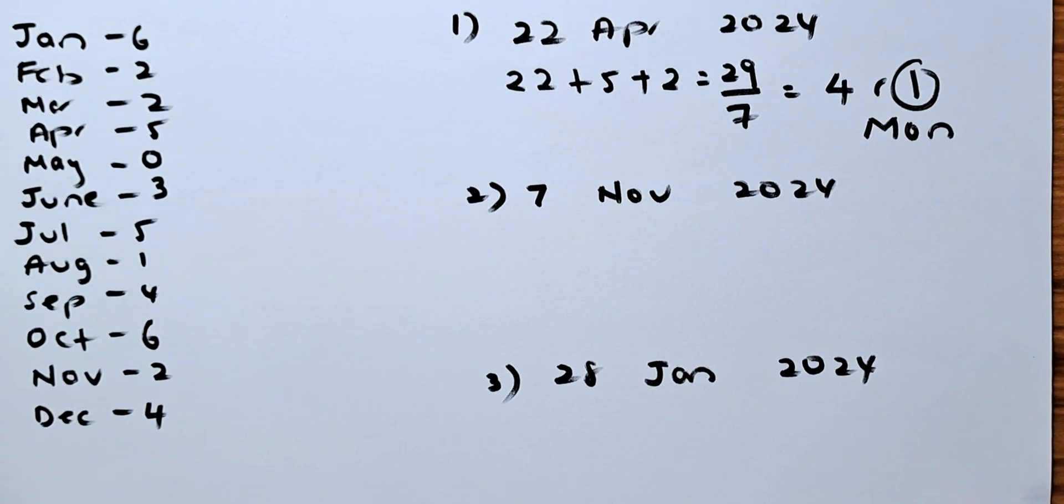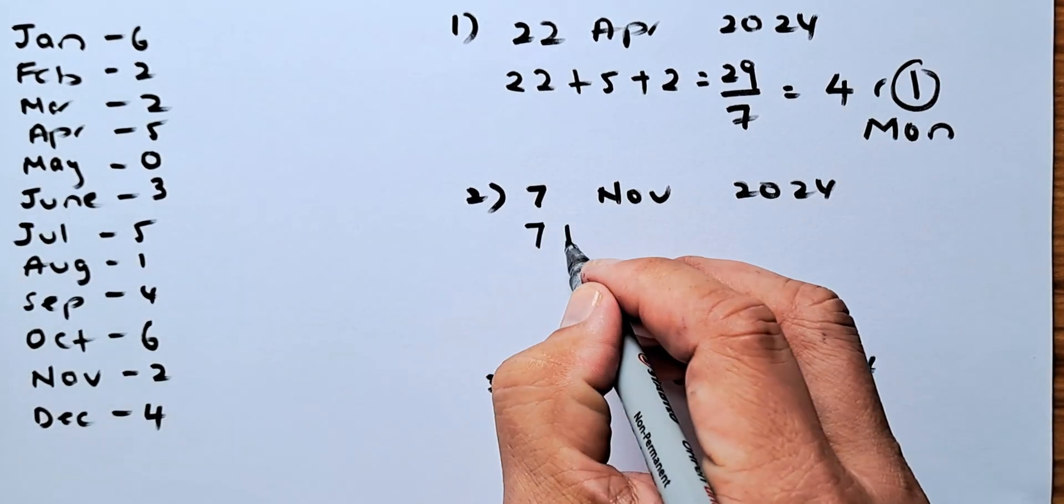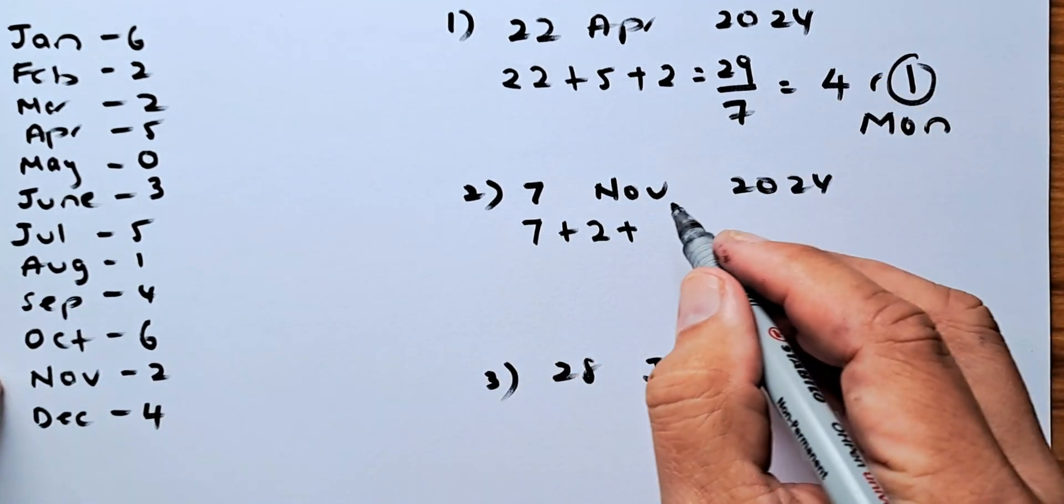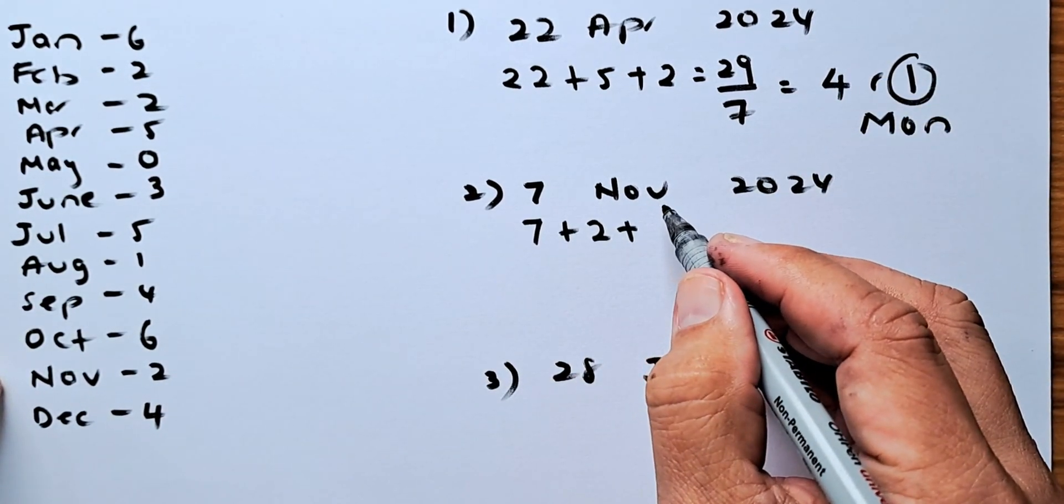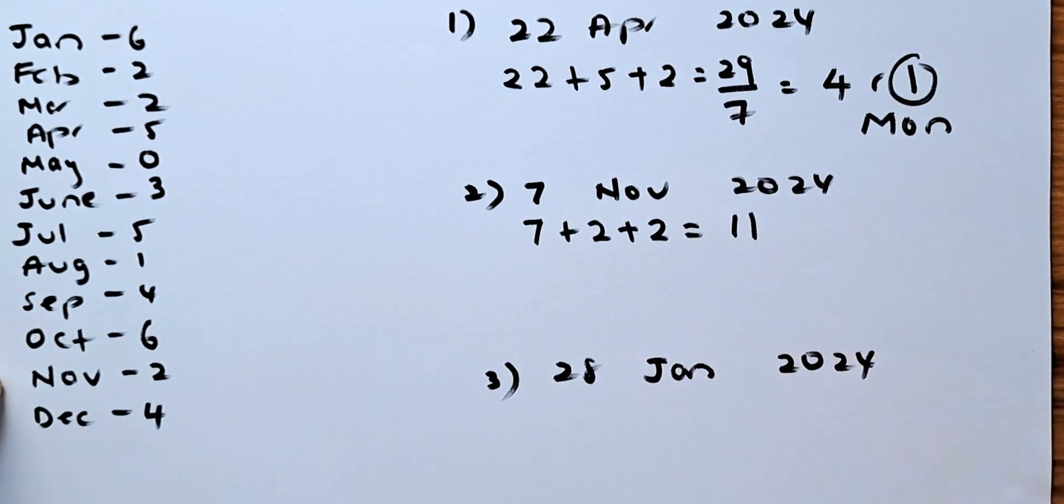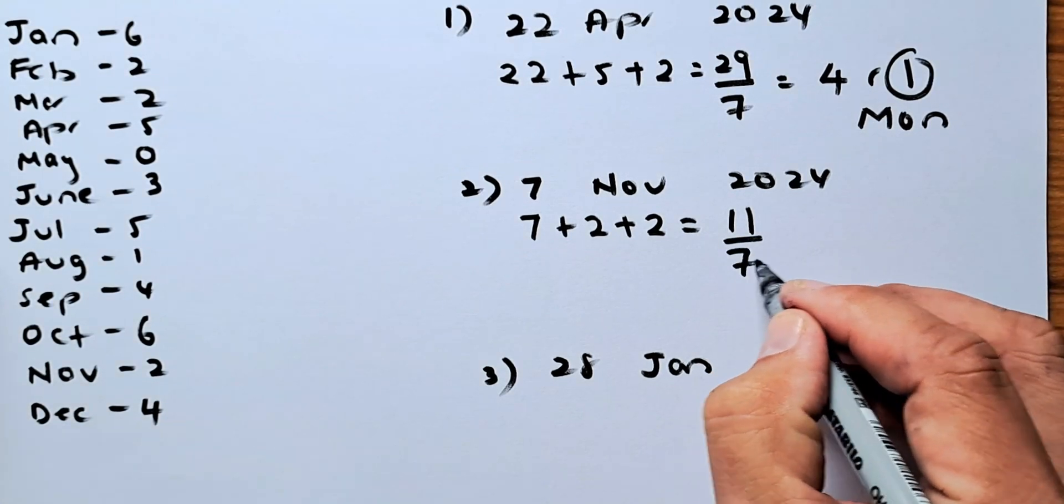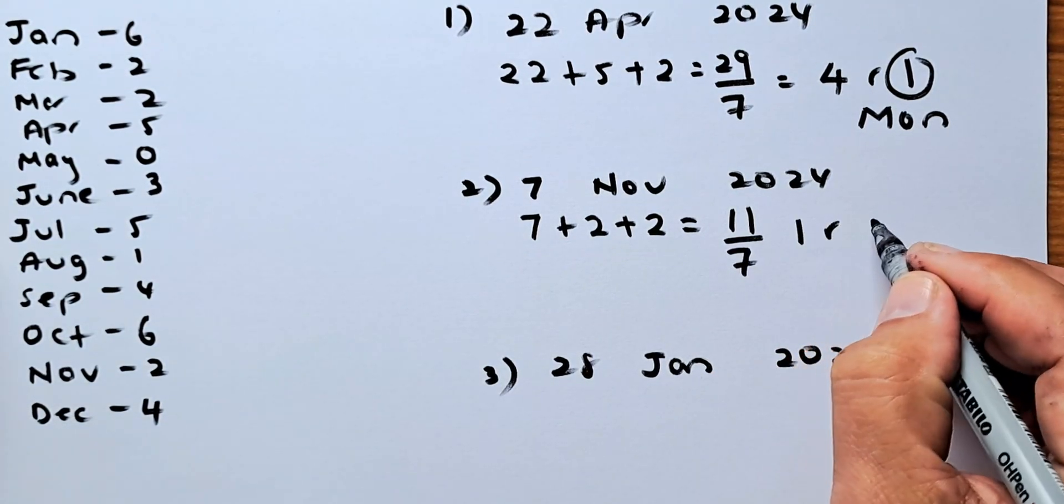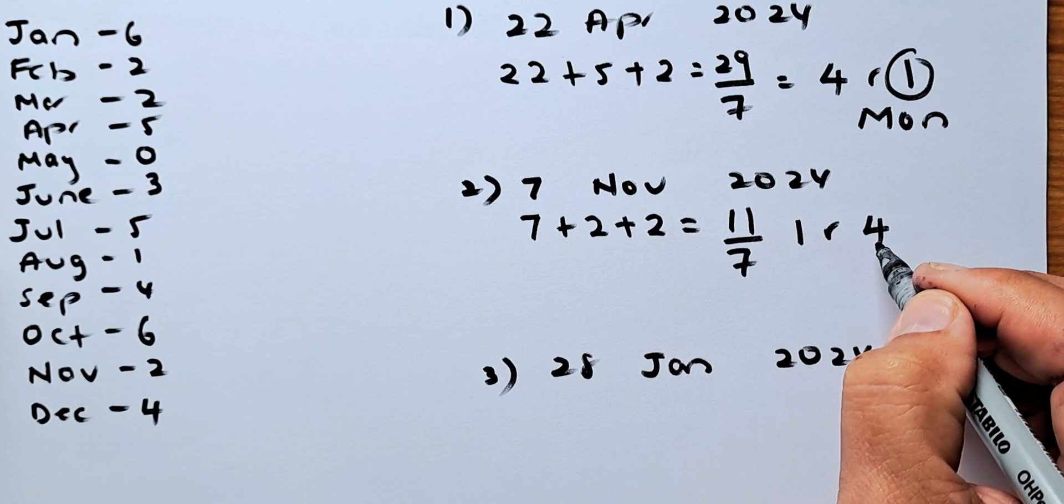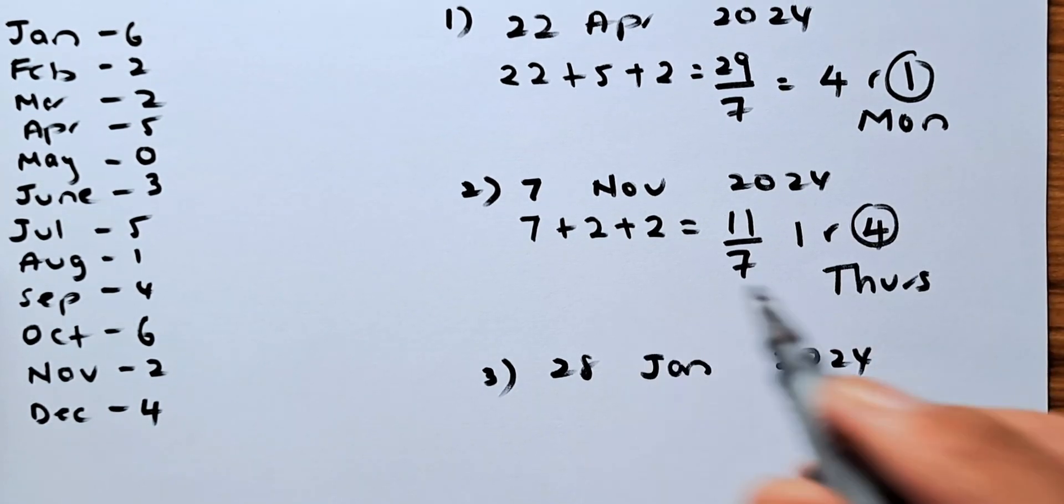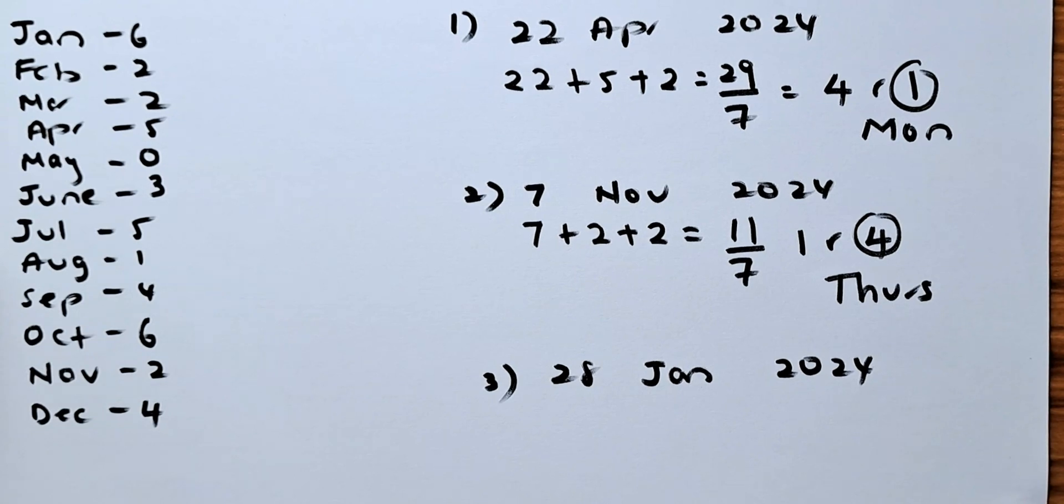So now we look at the second example. 7 of November 2024. So 7 plus November is 2. And because November is after January and February, you have to add 2. So it's going to be 11. Next step, you're going to divide 11 by 7. You're going to get 1, remainder 4. So 4 will give you a Thursday. So 7 of November 2024 is going to be a Thursday.